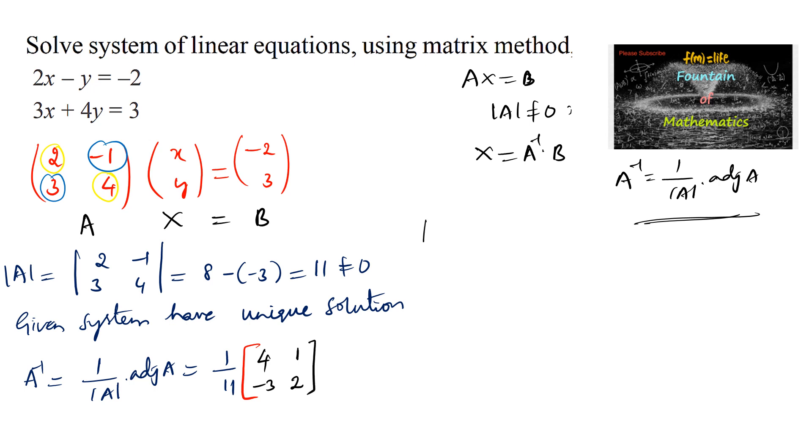So this is A inverse, and now x is equal to A inverse into B. We can write 1 by 11 into 4, 1, negative 3, 2 multiplied with matrix B, that is negative 2 and 3.